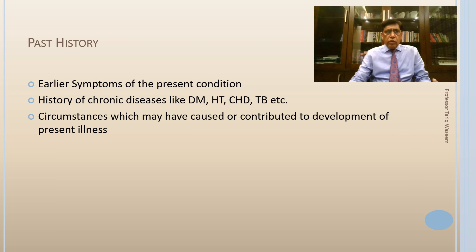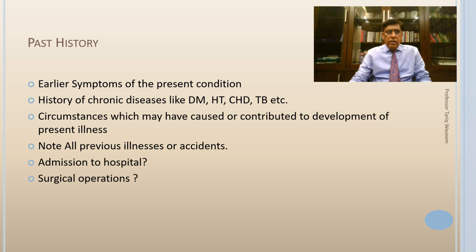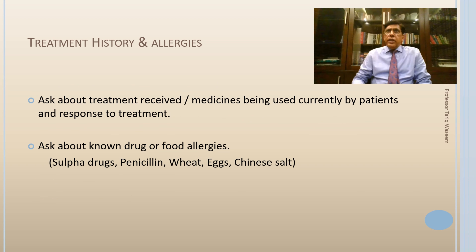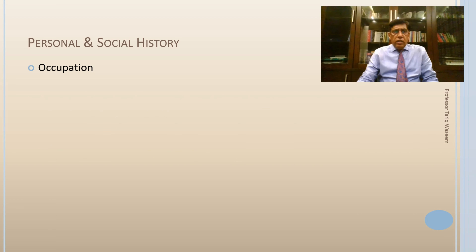Note all previous illnesses or accidents, previous hospital admissions, and surgical operations — which may be a reason for the current admission. Previous surgery may have formed adhesions causing intestinal obstruction. Blood transfusion history is important from the point of view of transmission of HIV or hepatitis C. Treatment history and allergies must be noted — ask about treatment for the current problem, current medications, and any allergies such as to sulfa drugs, penicillin, wheat, eggs, or MSG.